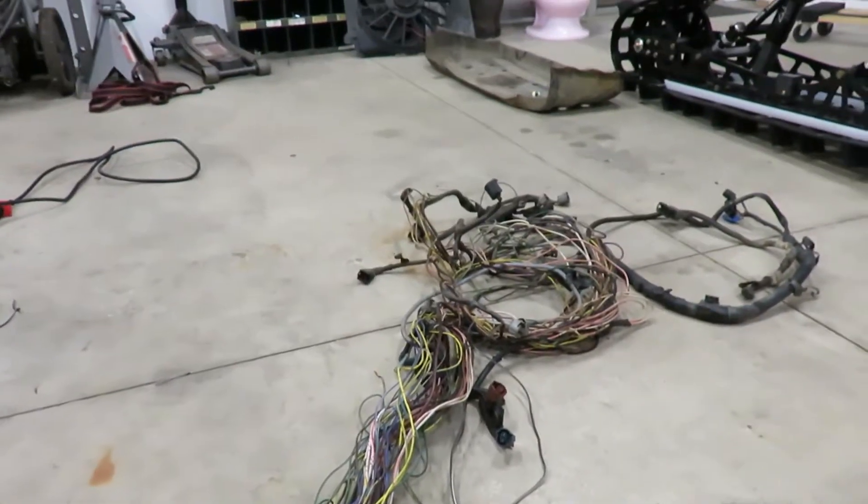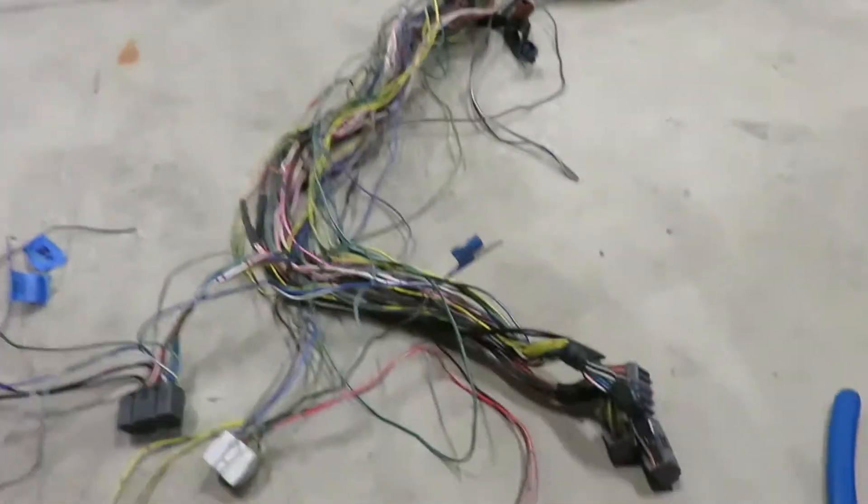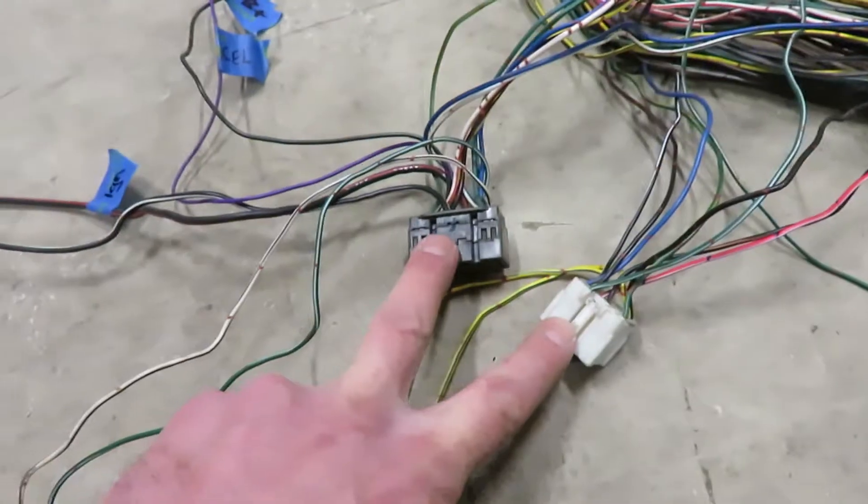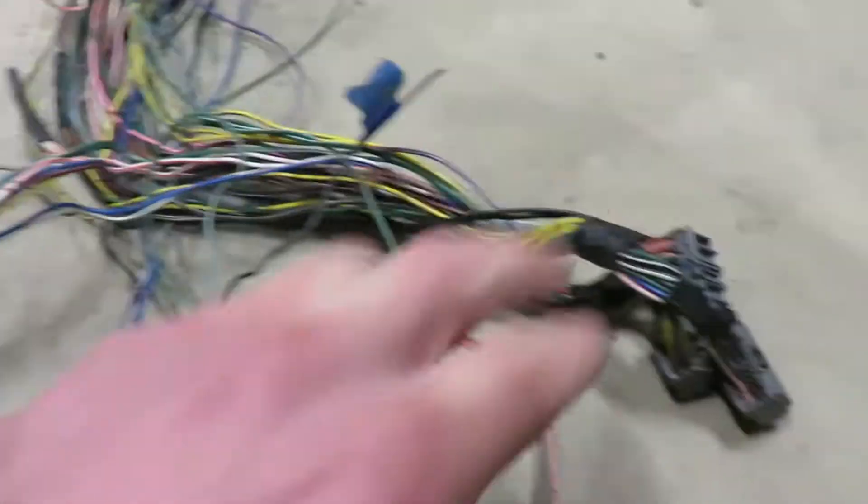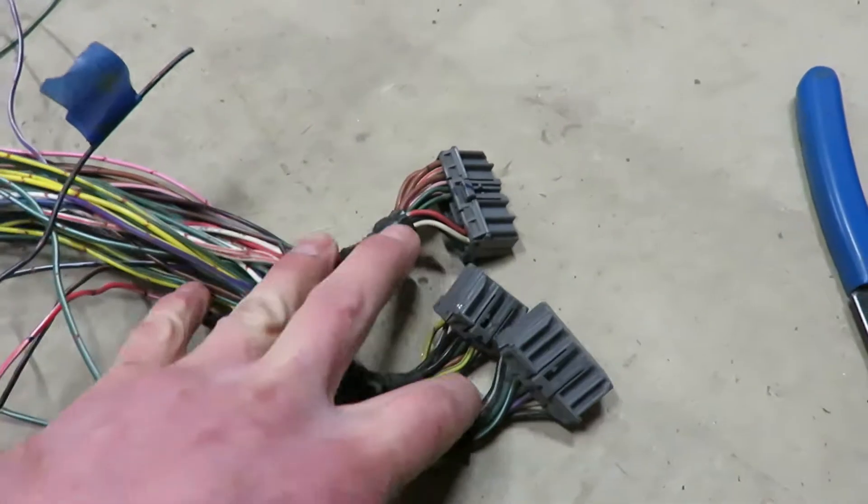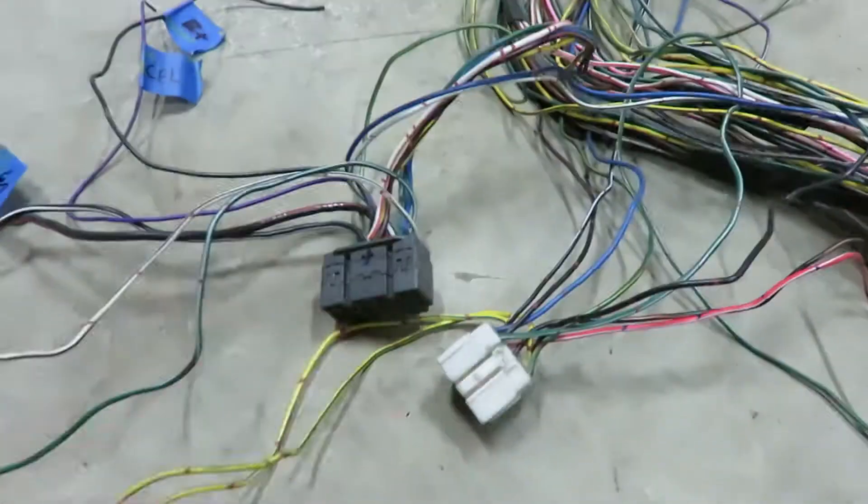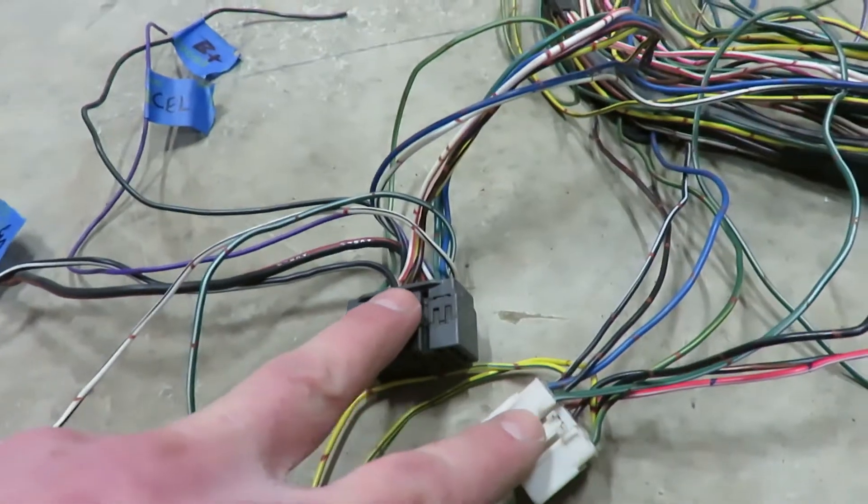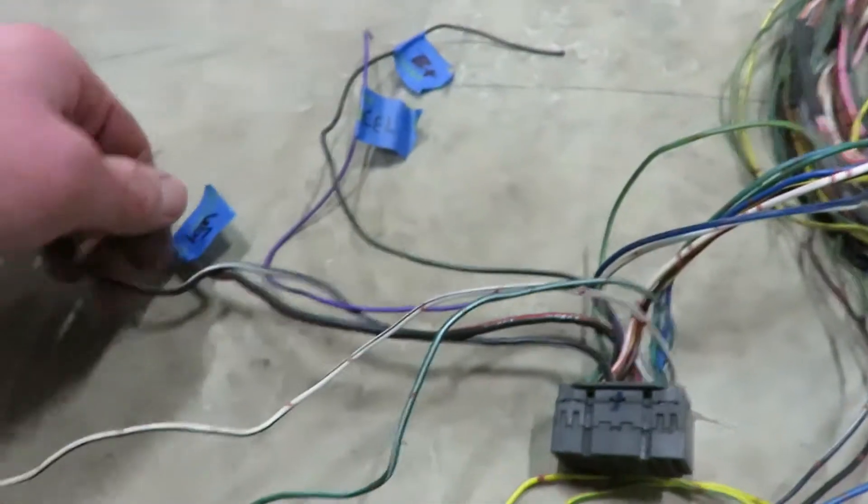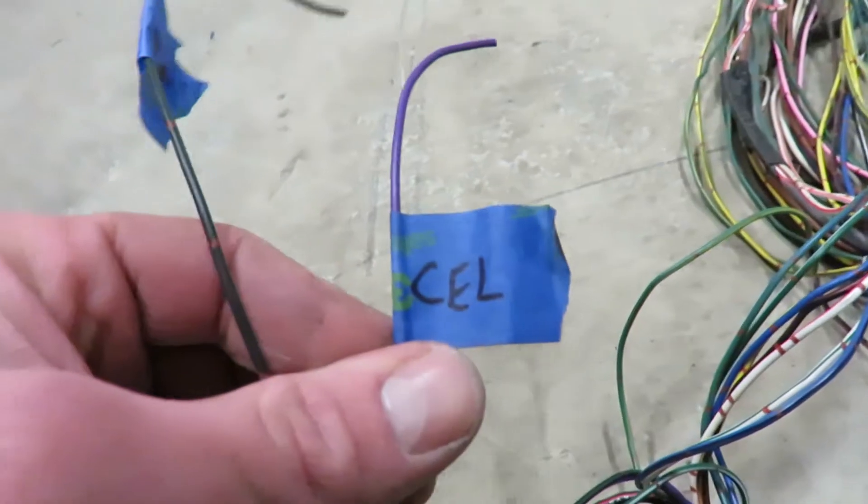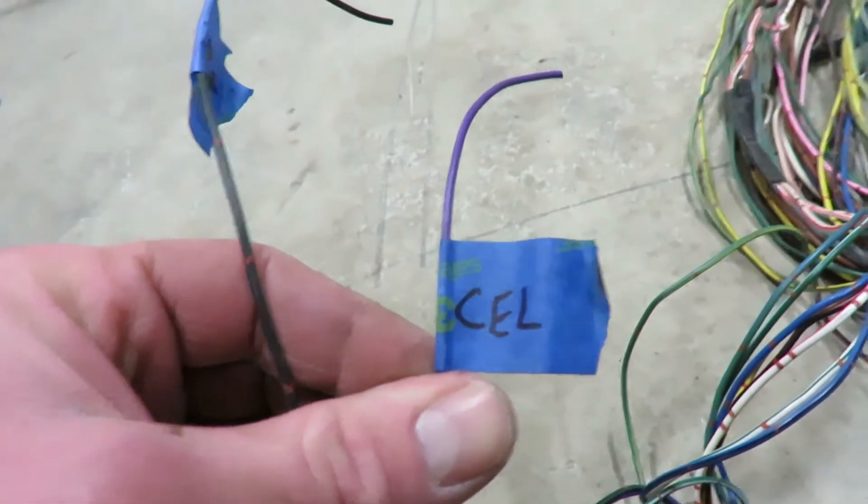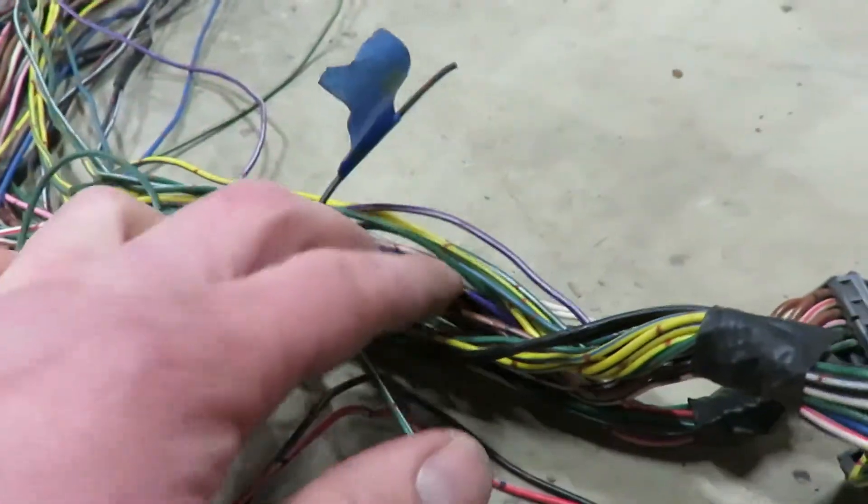Working on the Toyota engine harness. These two plugs are still in the truck, and these three originally went to the ECU which is no longer being used. So these two plugs have quite a bit of wire we need. There's the check engine light, originally went to the ECU on that purple wire there.